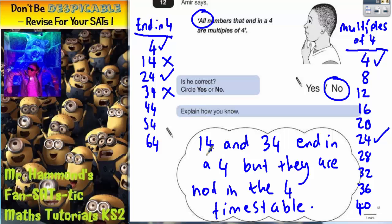And that would be a sufficient answer. You wouldn't even need to give both of them. As long as you can find one number that ends in a 4 that's not in the 4 times table, you would prove that he is not correct.